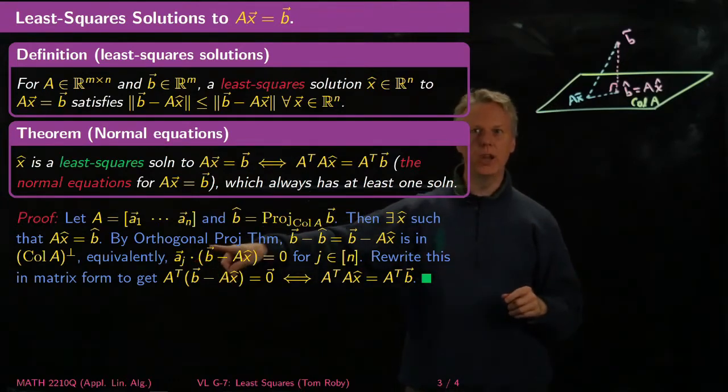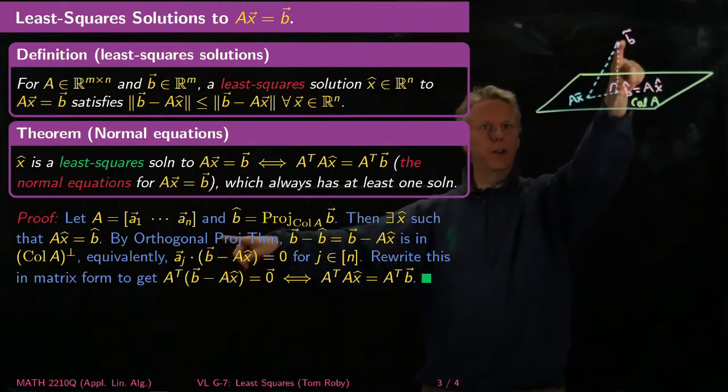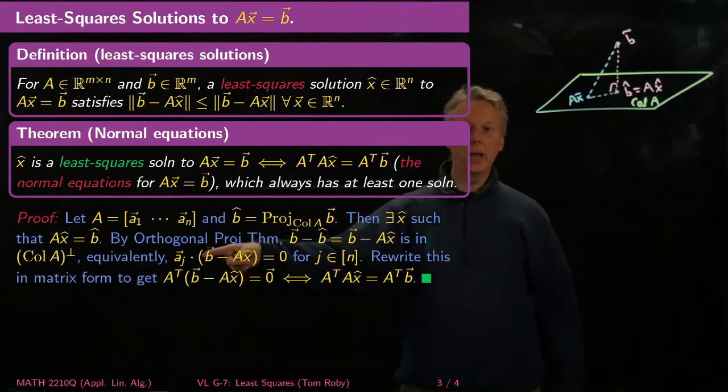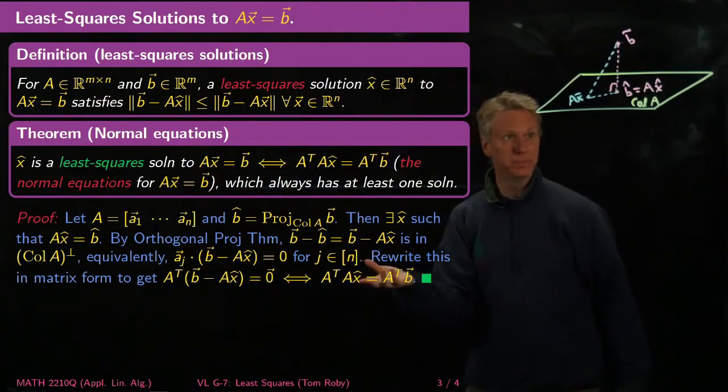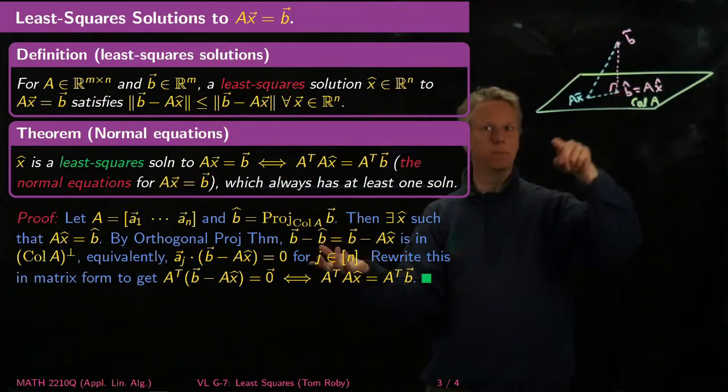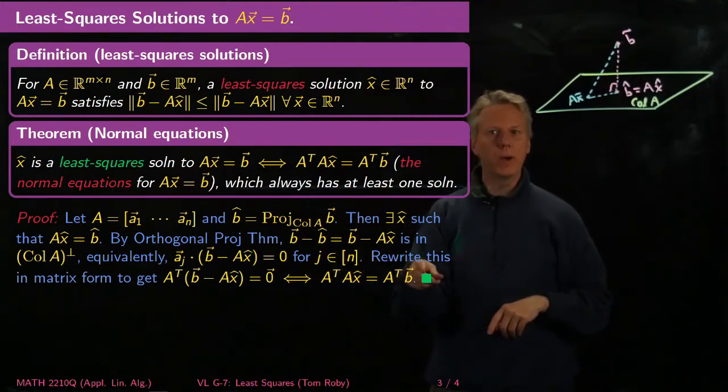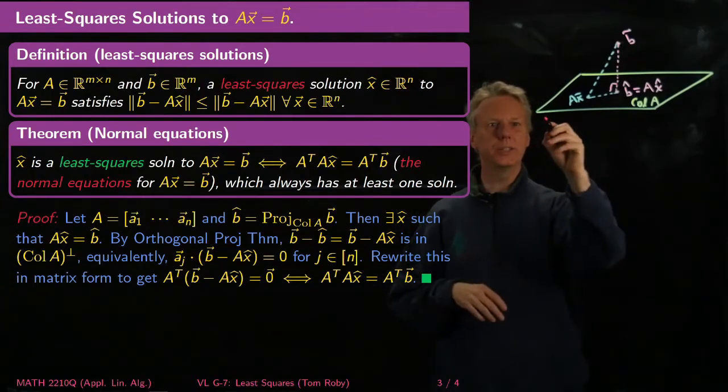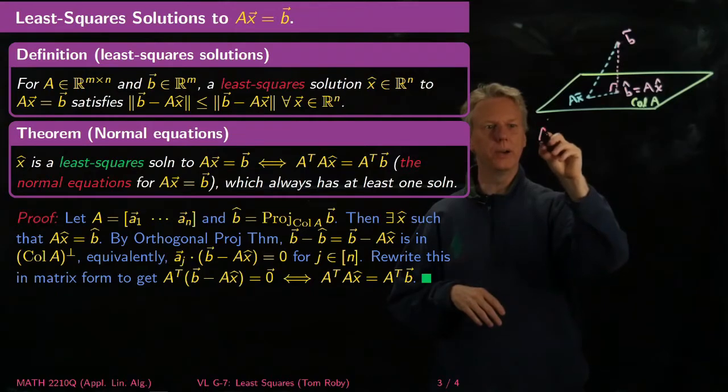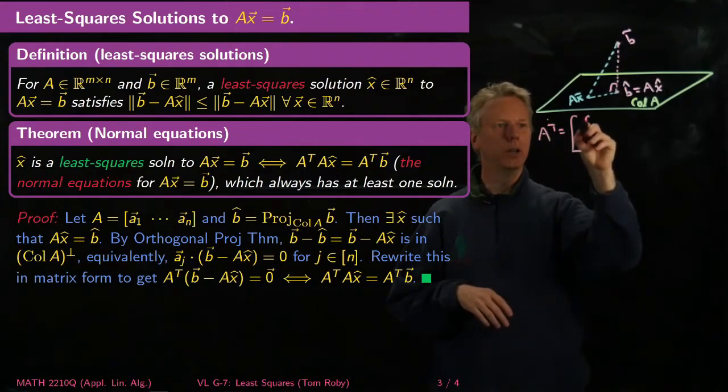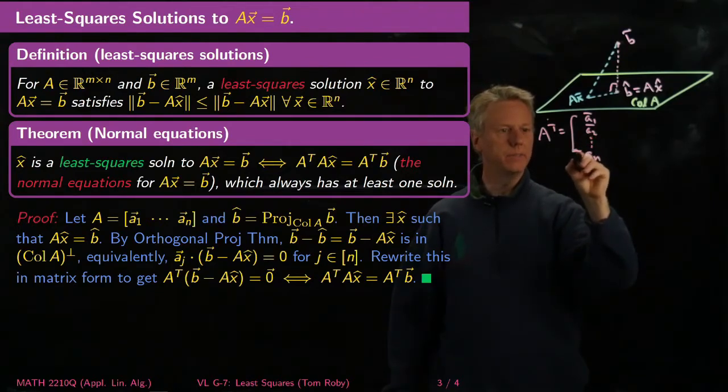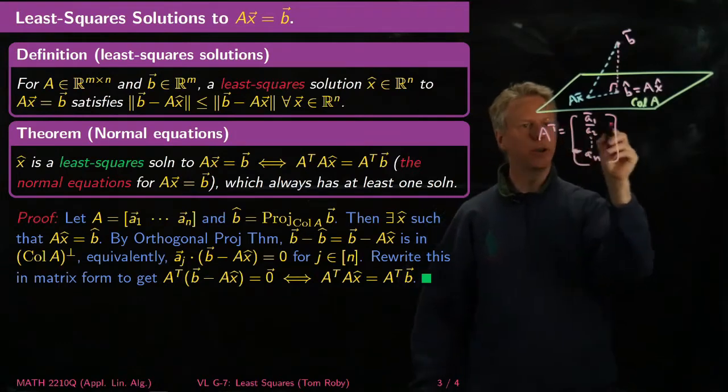So we've gotten this far. We've shown that this vector, the thing I dropped vertically from B onto that plane, when I dot product it with B minus AX, I always get zero. If you rewrite this in matrix form, here's the key thing. If I want to think about what this means, I just take A transpose equals the column vector [A1 A2 ... An].